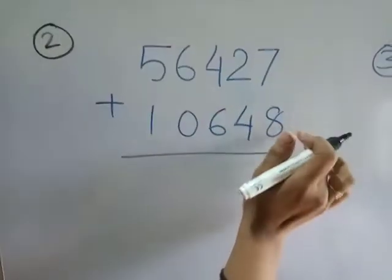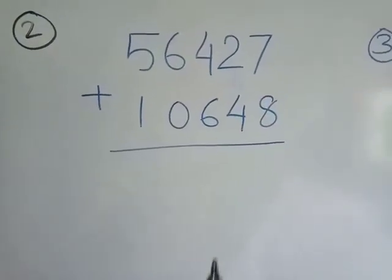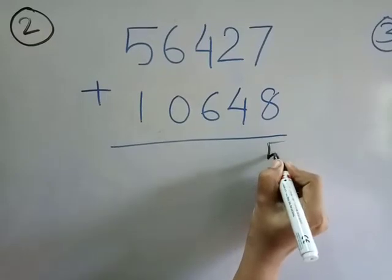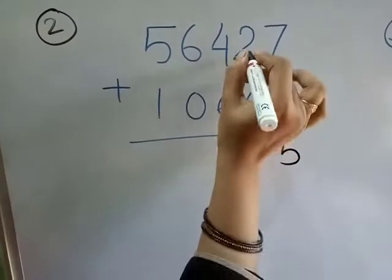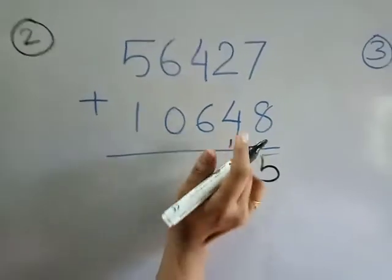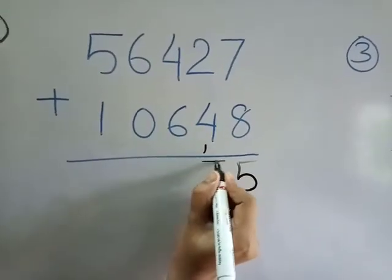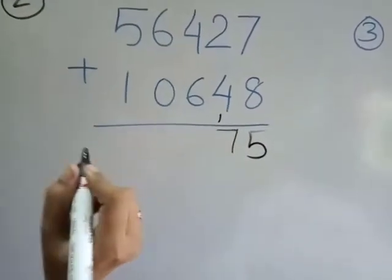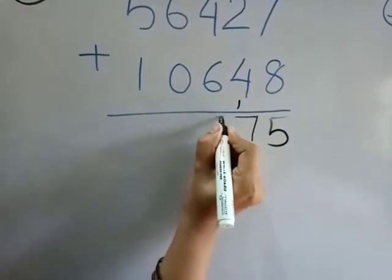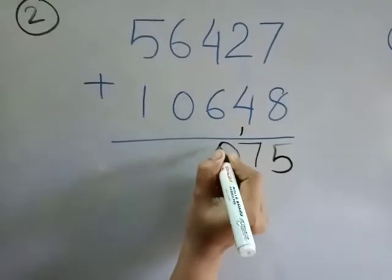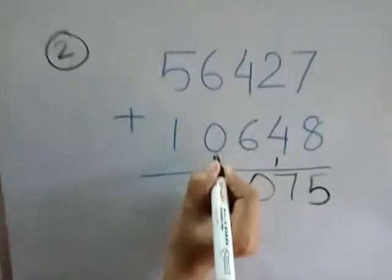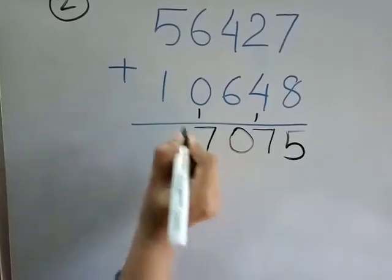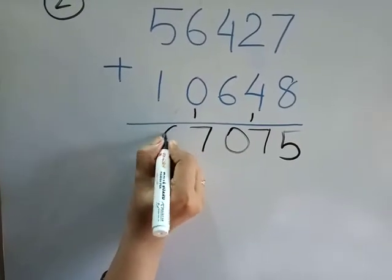Seven plus eight — how many is seven plus eight? Seven plus eight is equal to fifteen. So write five right here and one is carry. Two plus four is equal to six, six plus carry one is seven. Four plus six is equal to ten — carry one. Six plus zero is six, six plus carry one is seven. Five plus one is six.